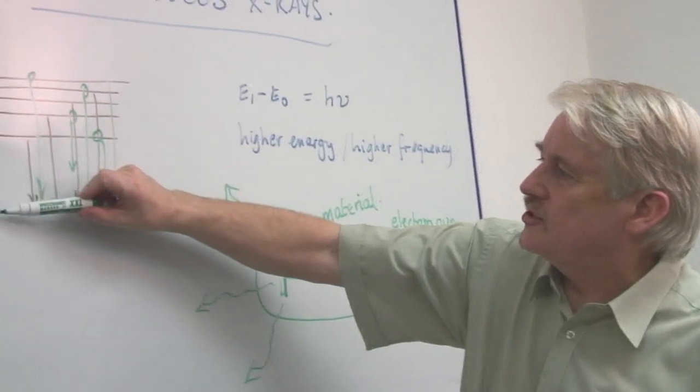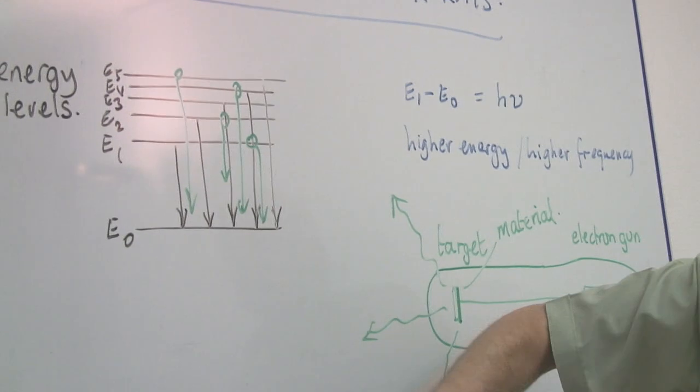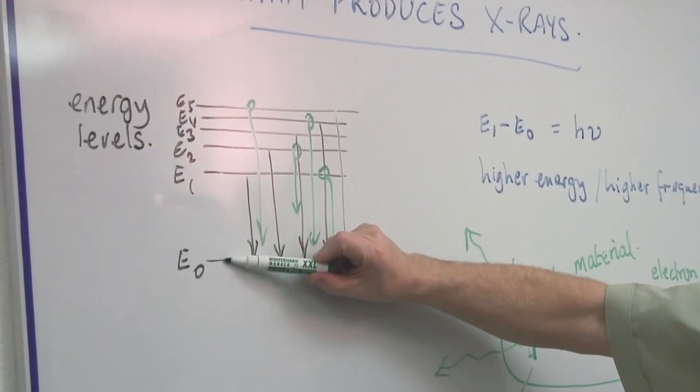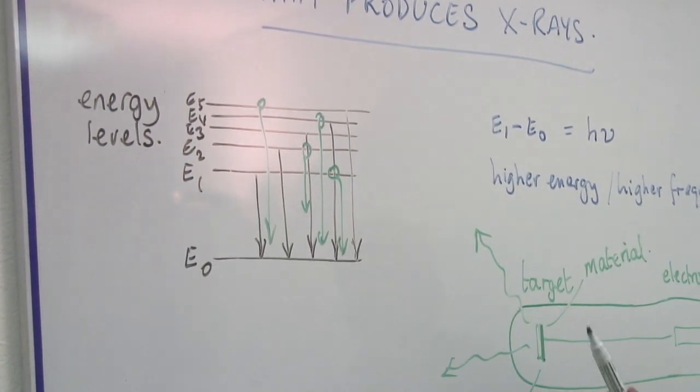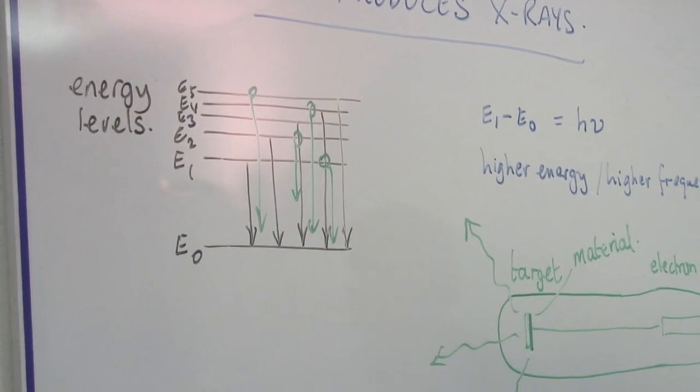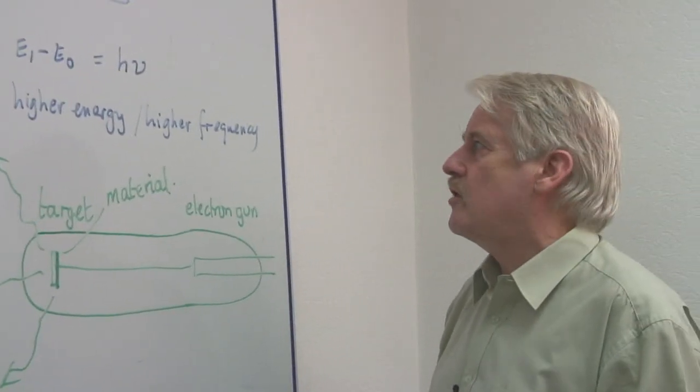So if we have energies here, E1 and E0, if it falls between the two, subtract the two energies, you get the energy that is created, or the energy that's produced to produce the x-ray.